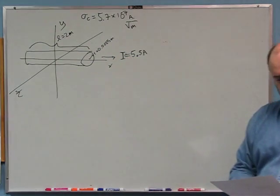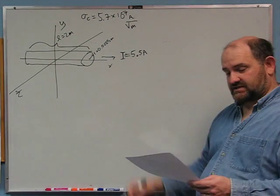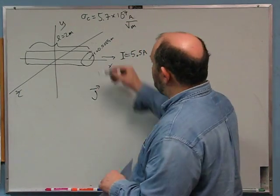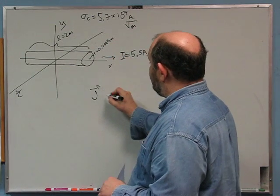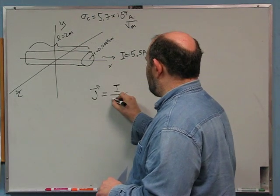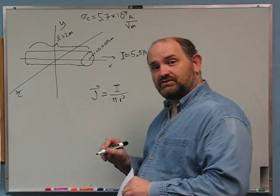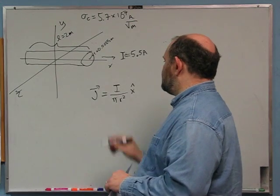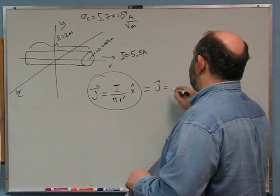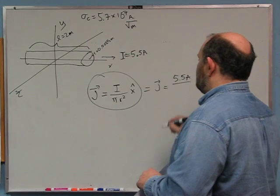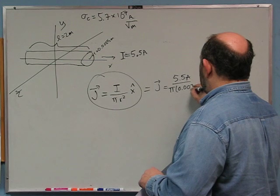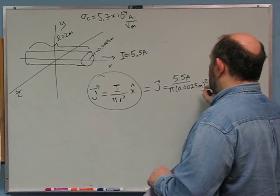It's a respectable current of 5.5 amps moving in the plus x direction as I've drawn. What is the current density J in the wire? Remember what current density is — current per cross-sectional area. And notice it's a vector. So I take the current I and divide it by the cross-sectional area pi r squared. The current is going in the plus x direction. So it's 5.5 amps divided by pi times 0.0025 meters squared x-hat.